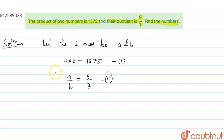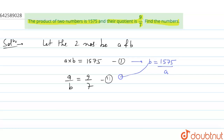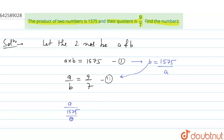From the first equation, we can write b equals 1575 by a. Putting the value of b into the second equation, we get a divided by (1575 by a) equals 9 by 7.